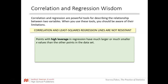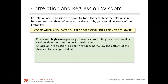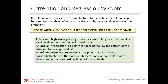Points with high leverage in regression have a much larger or much smaller x value than all the other points in the data set — think of it as far down the scale, different from an outlier. An outlier in a regression context is a point that does not follow the pattern of the data or has a large residual — it could be within the x domain but way off in no man's land. An influential point is any point in regression that, if removed, substantially changes the slope, y-intercept, correlation, r-squared, or standard deviation of the residuals.